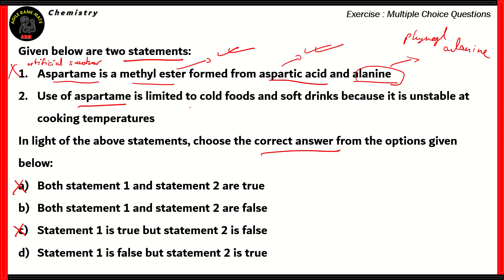The use of aspartame is limited to cold foods and soft drinks because it's unstable at cooking temperatures. This is true, because it's made out of amino acids, so therefore, it's limited to cold foods. So therefore, statement number two is true. That means the option that's correct is the last option, option number D. So option number D, statement one is false but statement two is true, is the right option.